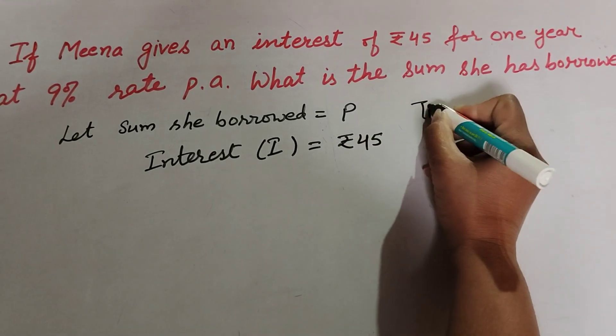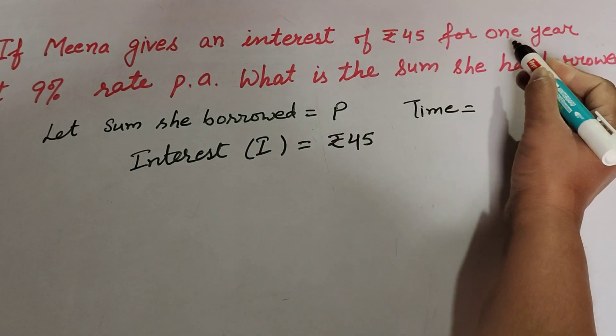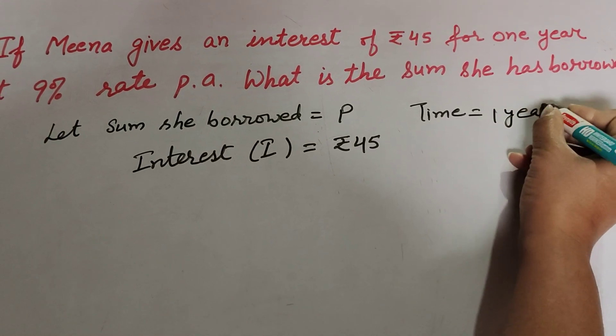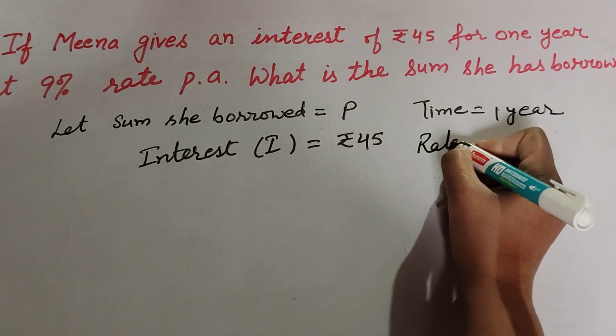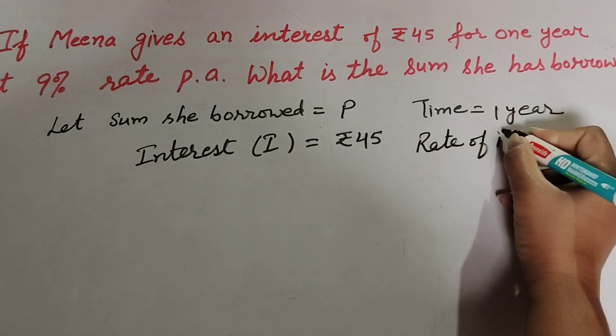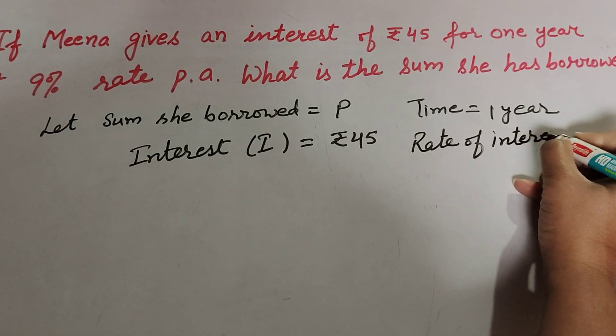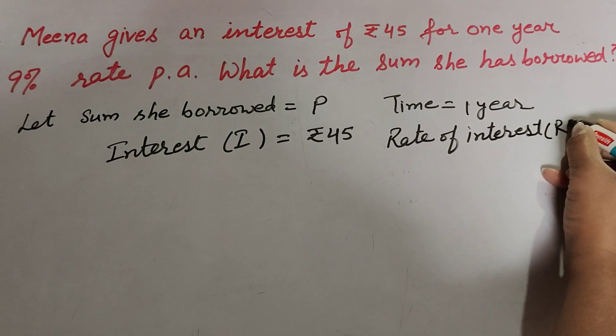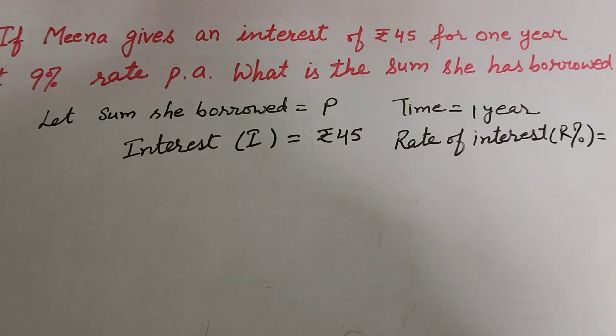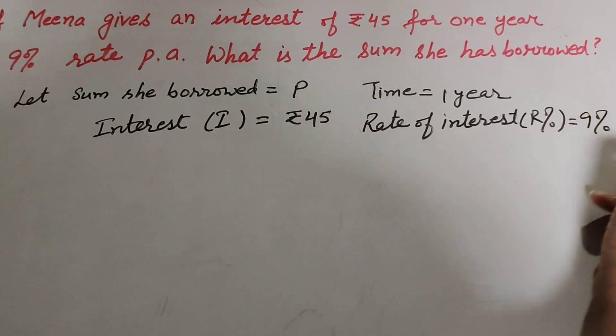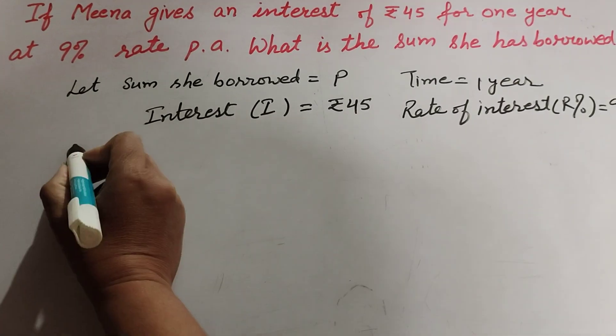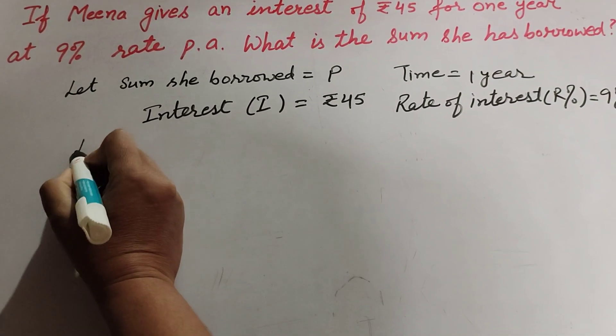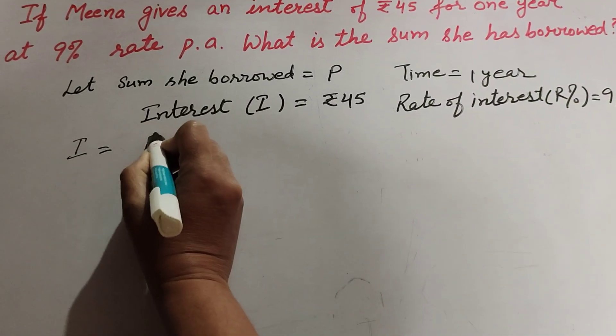The time is also given as one year, and the rate of interest R is 9%. So we know the formula to find interest: I = P × R × T / 100.